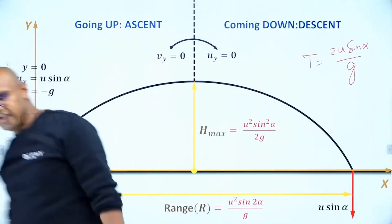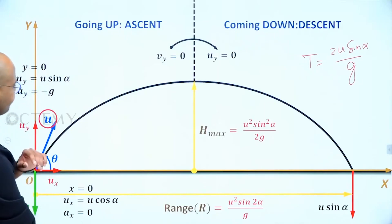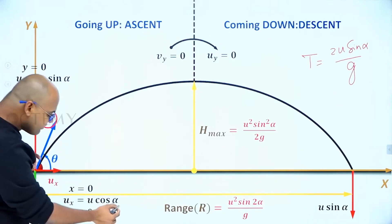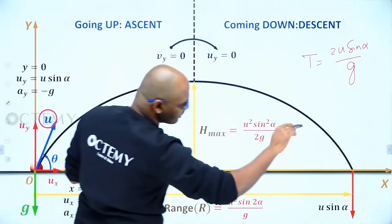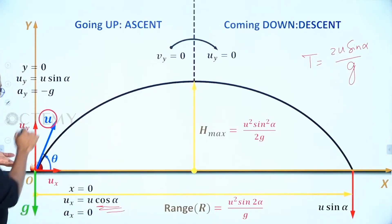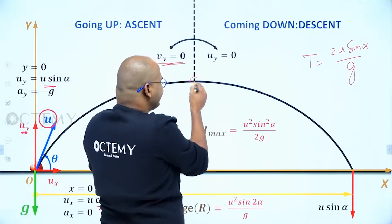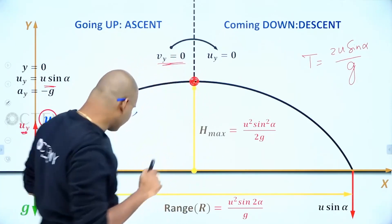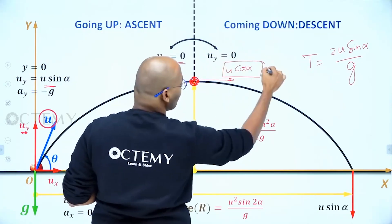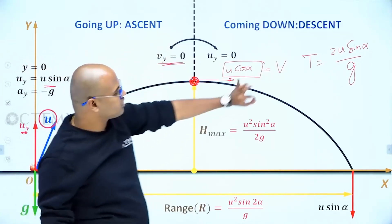Now let us analyze velocity at different points. In x direction, since acceleration is 0, the velocity is always u cos alpha at every point — at start, along the path, and at the highest point. In y direction, the velocity starts at u sin alpha, decreases as the ball goes up, and becomes 0 at the highest point. So at the highest point, the y-component of velocity is 0, and the total velocity is only u cos alpha.